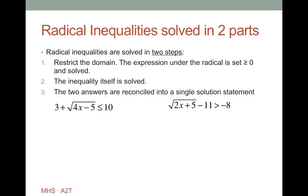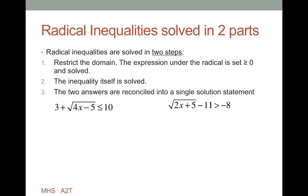Now we're going to talk about inequalities. Radical inequalities are solved in two parts. The first part is to restrict the domain. The value underneath the radical has to be non-negative to get a real square root, so the expression 4x minus 5 must be greater than or equal to 0. Solving that gives x greater than or equal to 5 fourths — that's the first part of our solution.